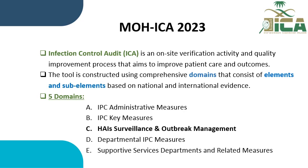There are five main domains in this tool: Domain A, infection control administrative measures; Domain B, infection control key measures; Domain C, hospital acquired infection surveillance and outbreak management; Domain D, departmental infection control measures; and Domain E, supportive services departments and related measures.